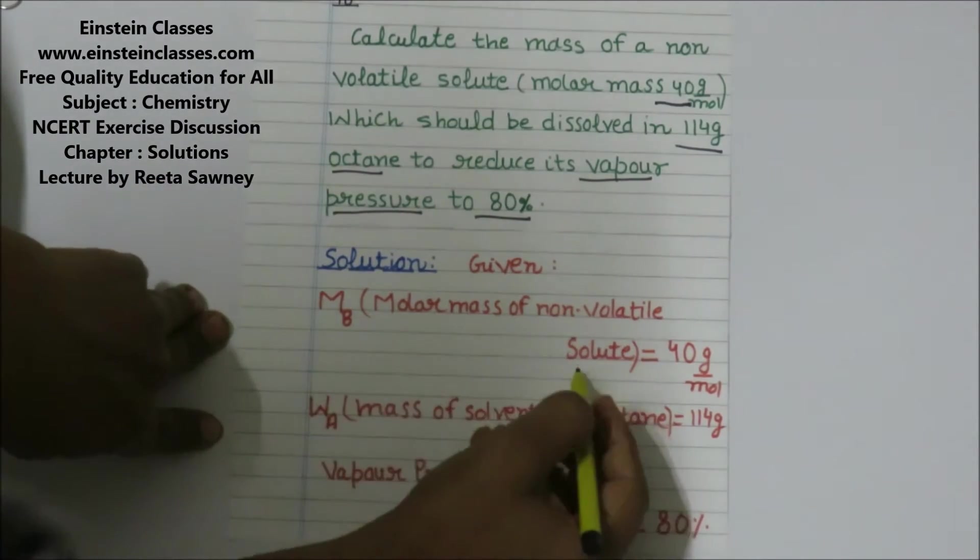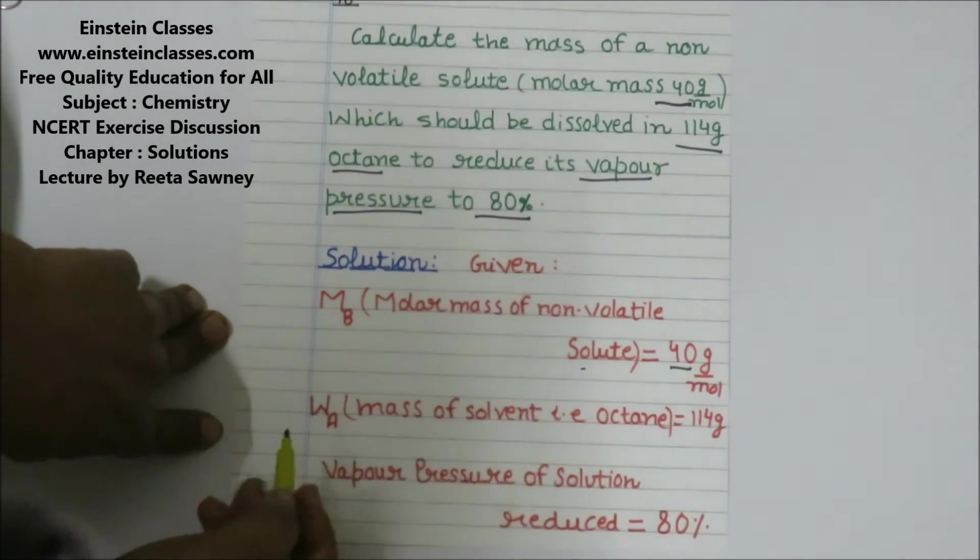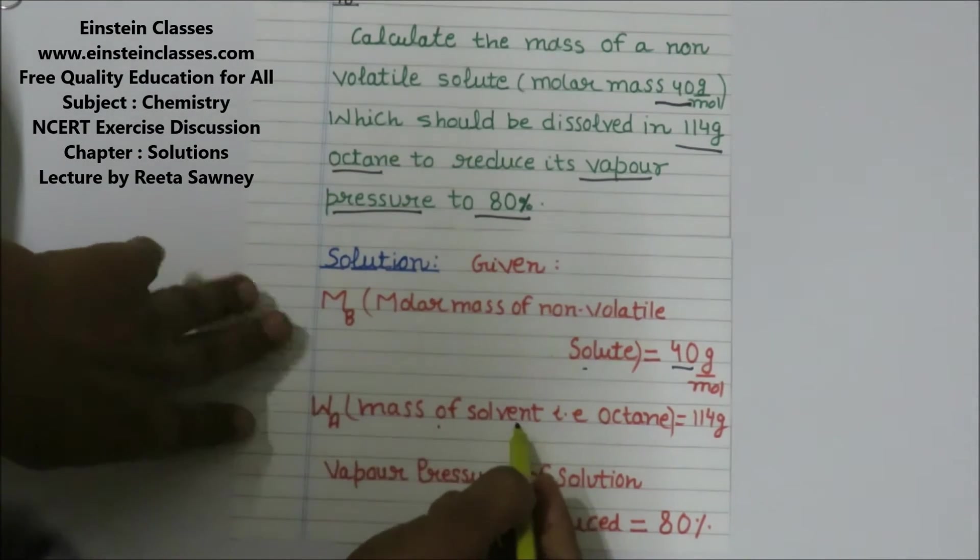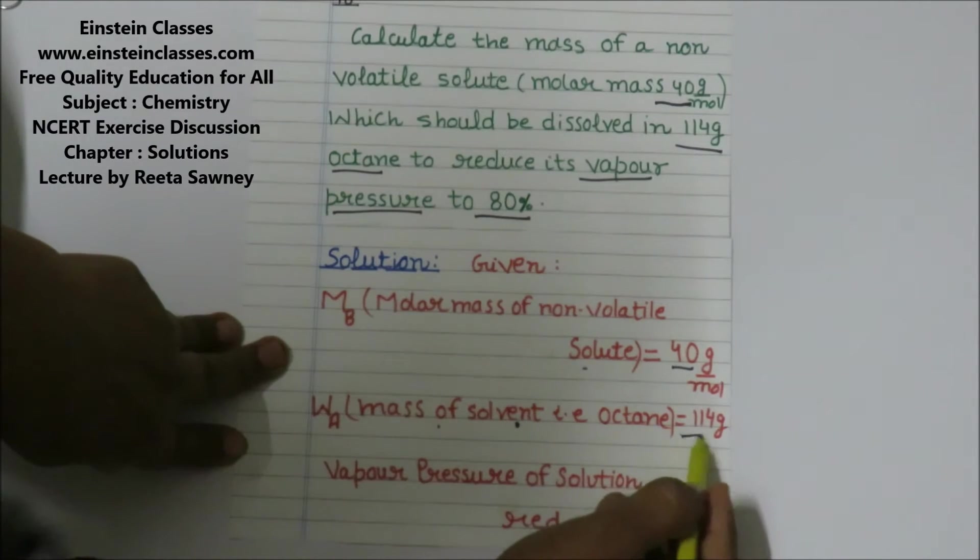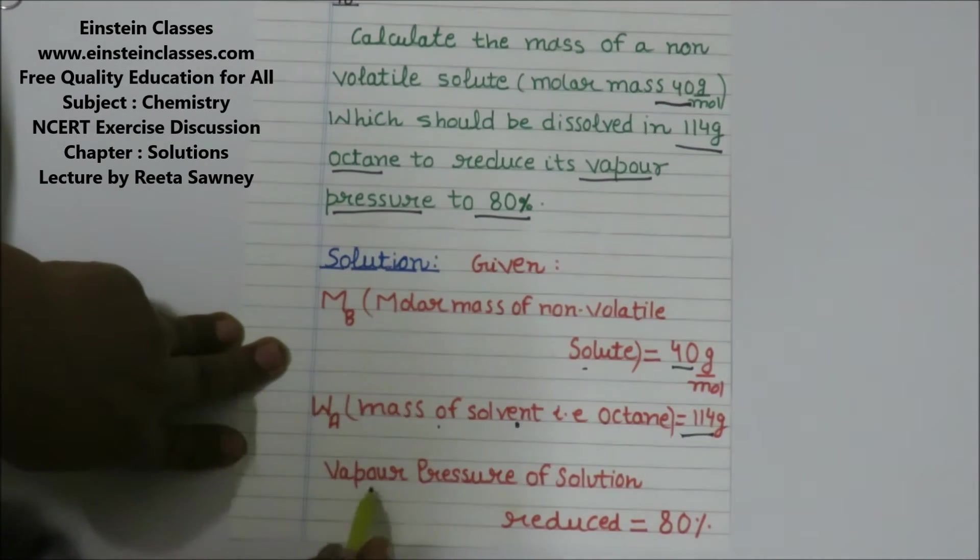The given is molar mass of the non-volatile solute which is 40 grams per mole, and the mass of solvent octane is 114 grams. The vapor pressure of solution is reduced to 80% when this non-volatile solute is added to the solvent. Find out the mass of the solute.